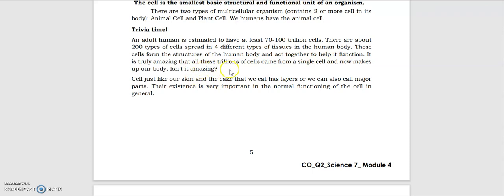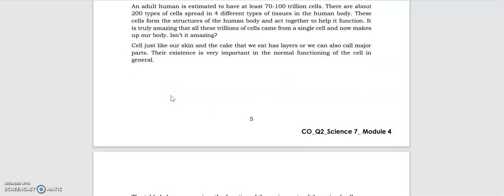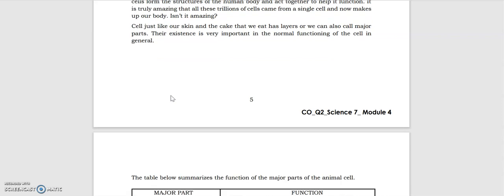It is truly amazing that all these trillions of cells came from a single cell and now makes up our body. Isn't it amazing? So cells, just like our skin and the cake that we eat, have layers or we can also call them major parts. Their existence is very important in the normal functioning of the cell in general.